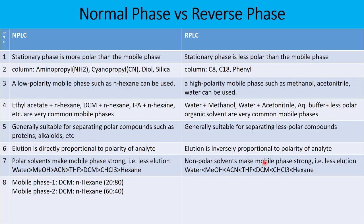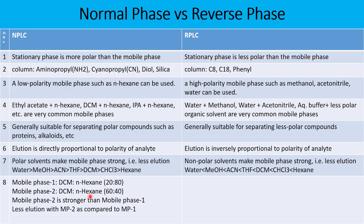Let us take an example to understand elution in normal phase. Mobile phase one contains dichloromethane and n-hexane at a ratio of 20:80, and mobile phase two contains dichloromethane and n-hexane at 60:40. Since polar solvents make the mobile phase stronger, and DCM is polar, the mobile phase with more DCM — mobile phase two at 60:40 — is stronger. Therefore, compounds will have less retention time in mobile phase two compared to mobile phase one.